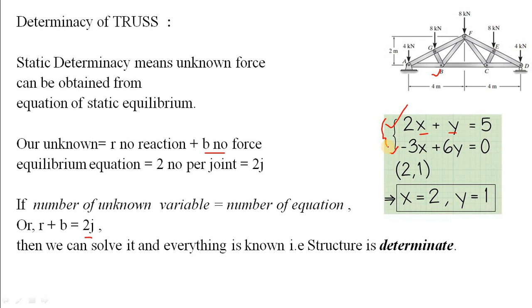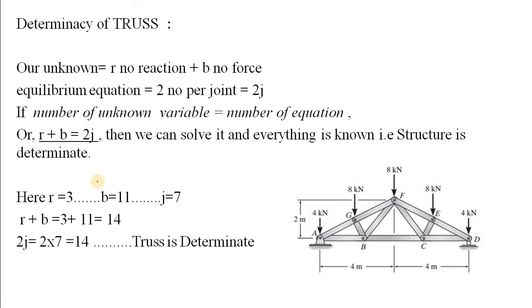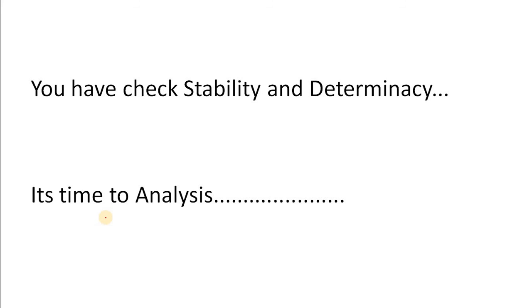If the number of unknowns equals the number of equations, the structure is determinate. In this example, r equals 3, b equals 11 members, and j equals 7 joints — so total unknowns are 14 and total equations are 14. Since they are equal, this truss is determinate. Now you have learned how to check the stability and determinacy of a truss. If you find this video useful, don't forget to subscribe.